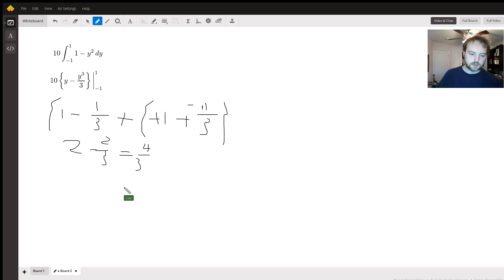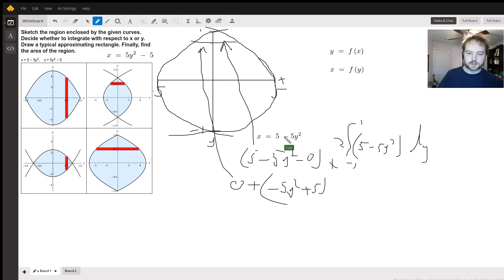And then remember, we've got this 10 on the outside. So the ultimate answer should be 40 divided by 3. And just to double check, our answer makes sense. If this was a rectangle, this would be 10, and this would be 2. So we'd have a total area of 20.